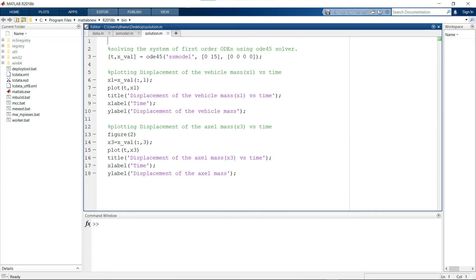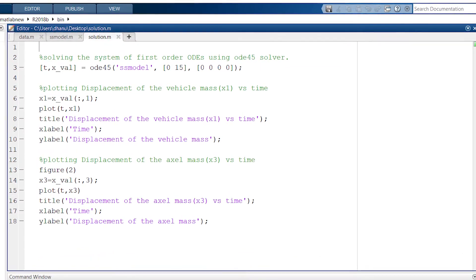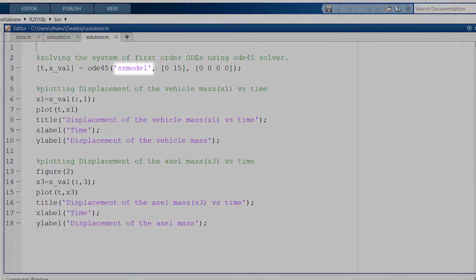In this solution file, I have solved our system of four first order differential equations using ODE45 solver. As input parameters to the solver, I have given the name of the file which contains our ss_model function and then the time span that we need our system of differential equations to be solved for. This is the initial conditions of the state variables of our system and then this ODE45 solver will output a set of time values in this vector t within the time span that we specified before. This x_val matrix is a matrix which returns the values of our state variables corresponding to the time values in t.